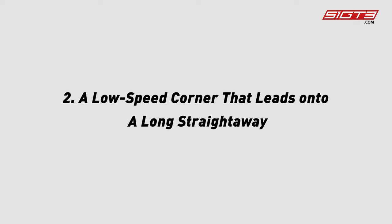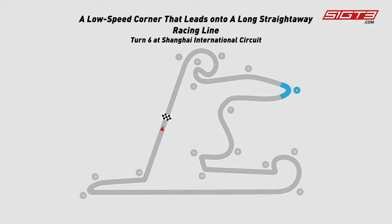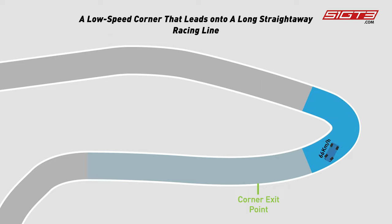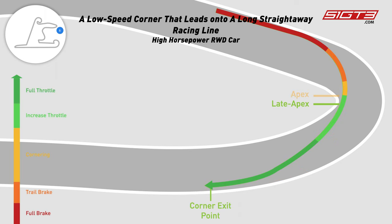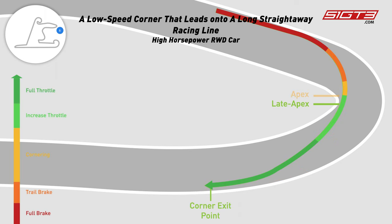Another type of low-speed corner is one that leads onto a long straightaway. Turn 6 at Shanghai International Circuit is an example of that. The most important thing to achieve here is maximizing our speed as soon as we get to the corner exit point and through the straightaway that follows. A late apex line works better than a geometric line for a high-horsepower rear-wheel drive car because it gives us an extended corner exit phase and allows the driver to accelerate earlier, eventually exiting at a higher speed.